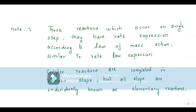Now certain key points to note: reactions that occur in a single step are called elementary reactions. For elementary reactions, the rate calculated by the law of mass action and the rate shown by the rate law expression are the same. The law of mass action need not always be correct, but in elementary reactions it is correct.